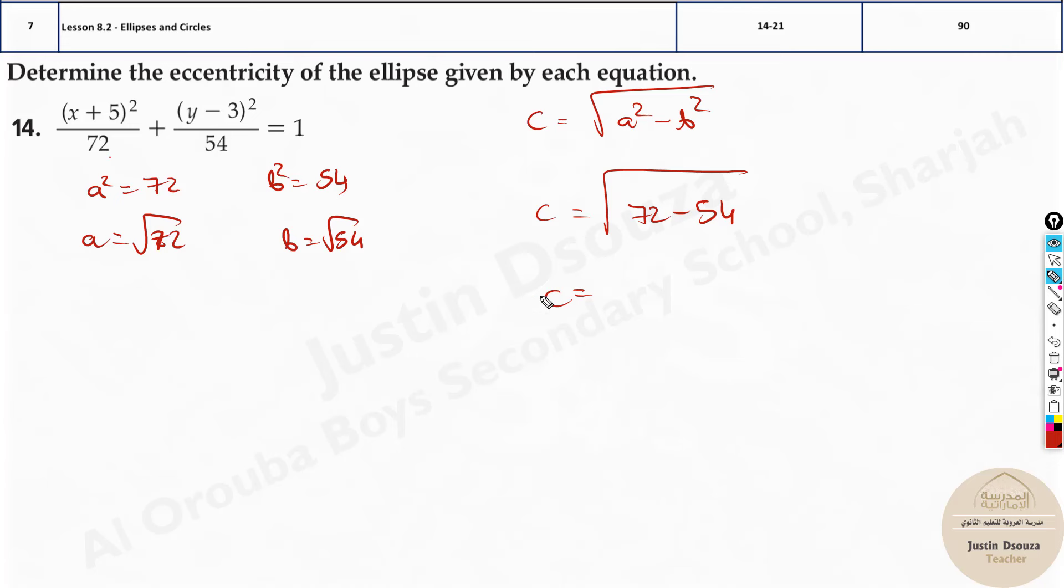But this is just finding a, b, c. What we have to find is eccentricity of the ellipse, which is given by e equals c divided by a. This is the reason why we find the value of c.